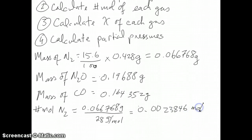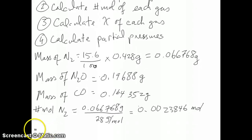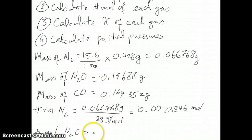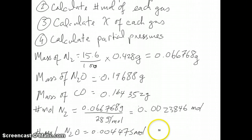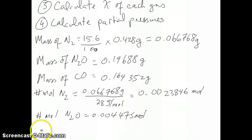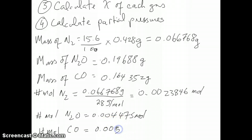Keep all these numbers in your calculator and don't round yet. You can do the same calculation for the number of moles of N2O using the same approach with molar mass — you should get 0.004475 moles. And if you make the same calculation for carbon monoxide, you should get 0.0058697 moles.